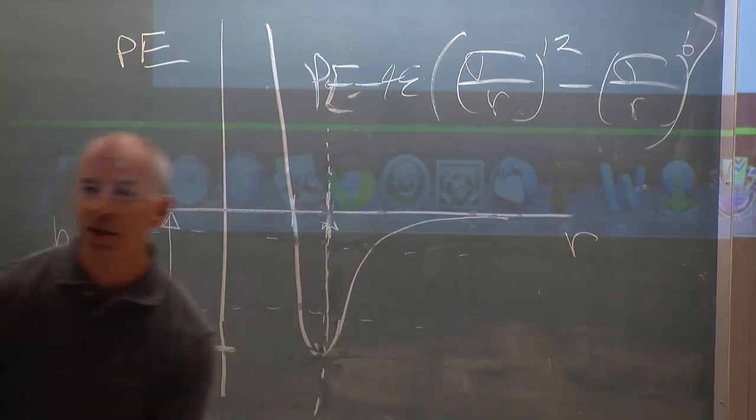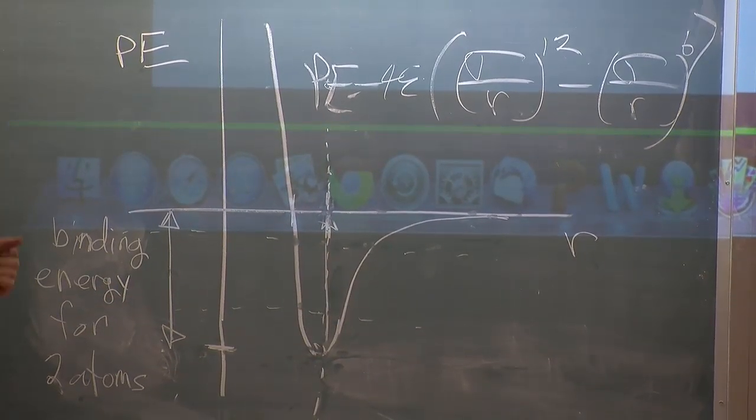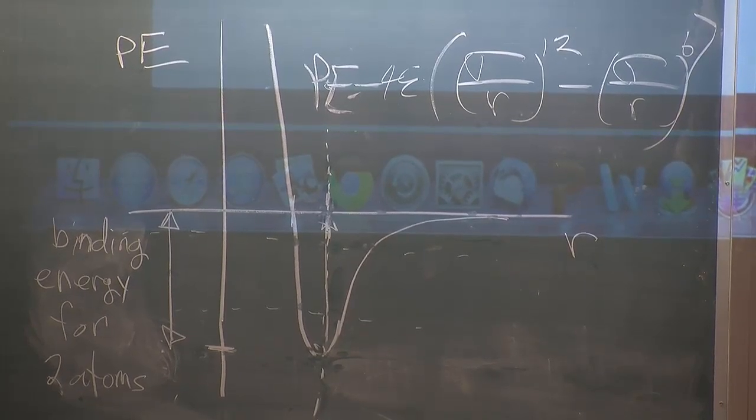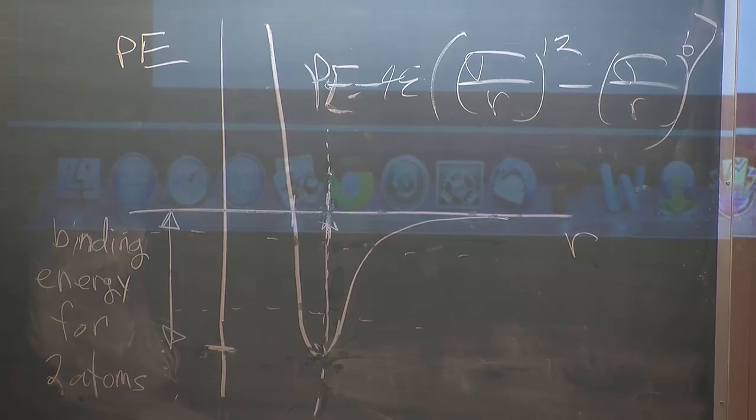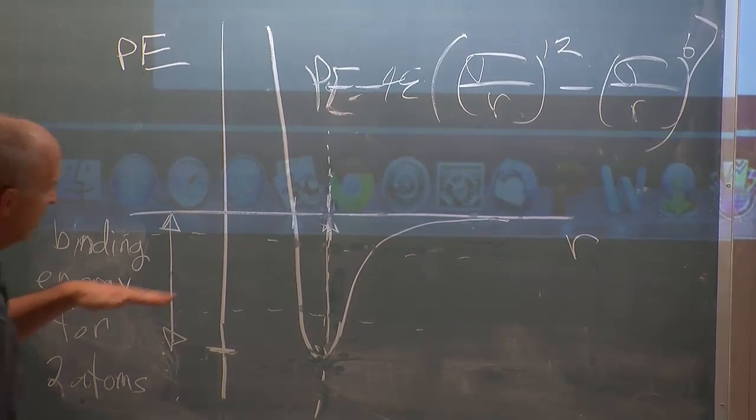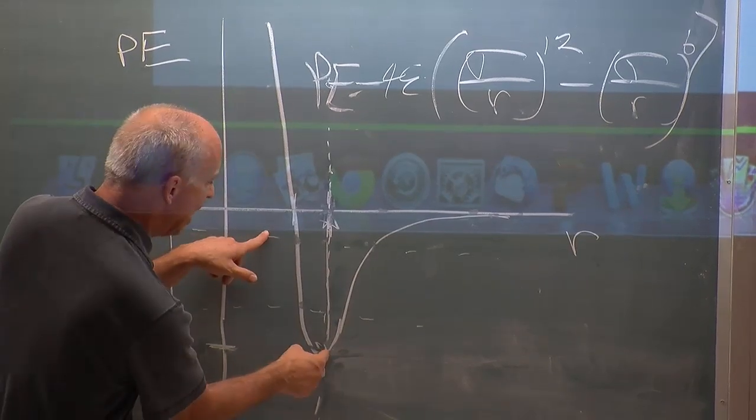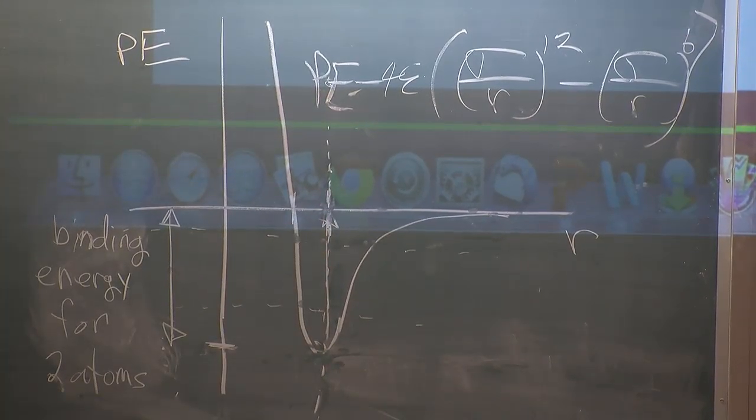Because when they're apart at large R, you want them to have either zero energy or enough kinetic energy that they can fly up, that they're still flying apart. So the minimum energy at very large R is zero that you want them to have. So you have to add in this much binding energy to break them apart.